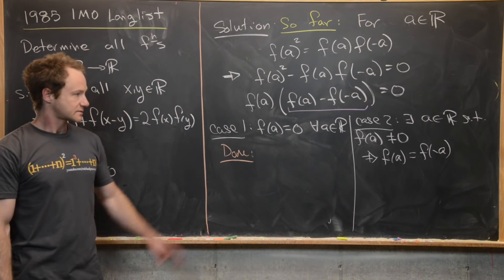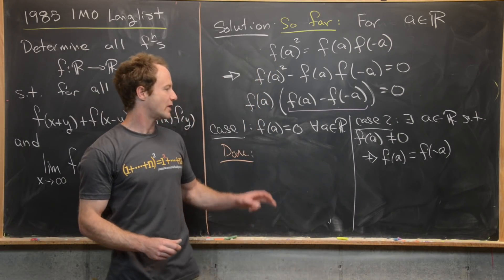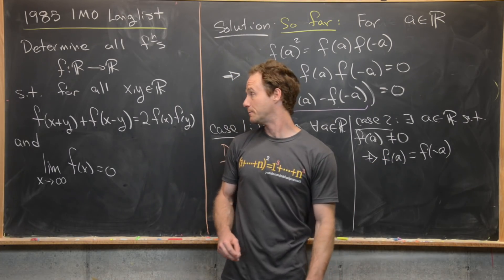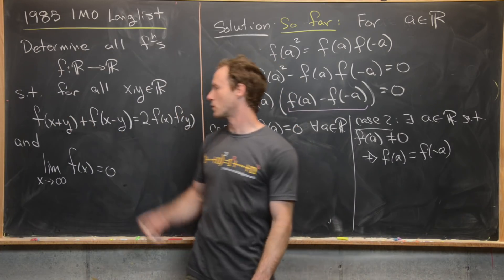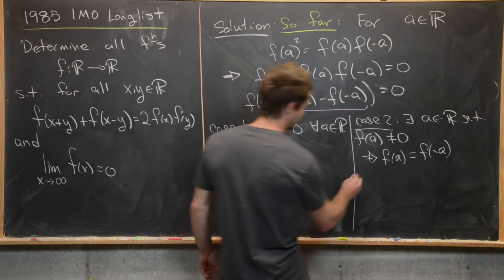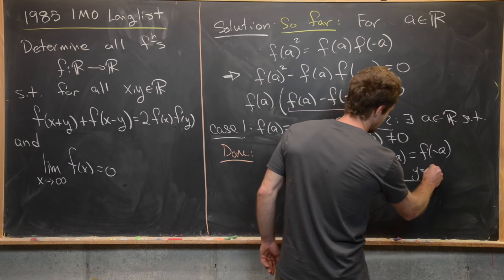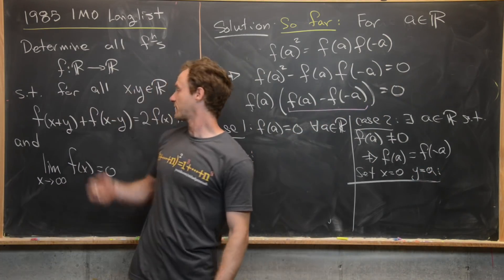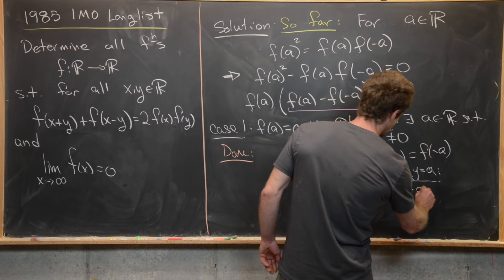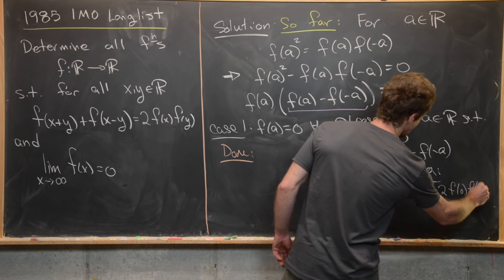Now what we want to do is go back to our functional equation here and see what we can do to get something that involves f(a) and f(-a). And you see that if we set x equal to zero and y equal to a, we get exactly that. So let's set x equal to zero, y equal to a, and that is going to turn this functional equation into f(a) + f(-a) = 2f(0)f(a).